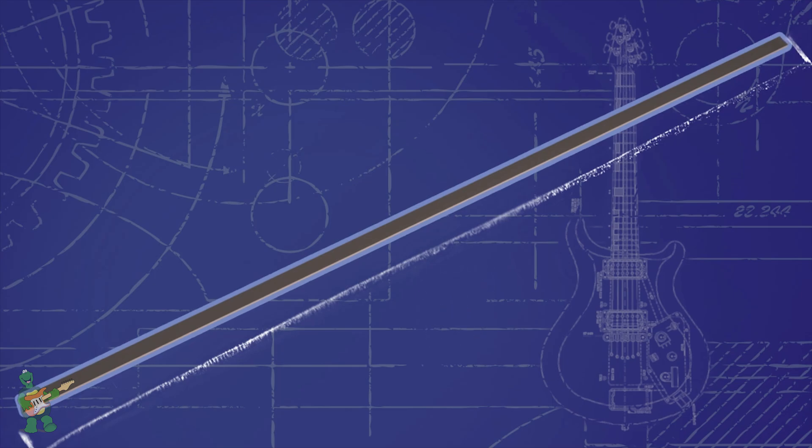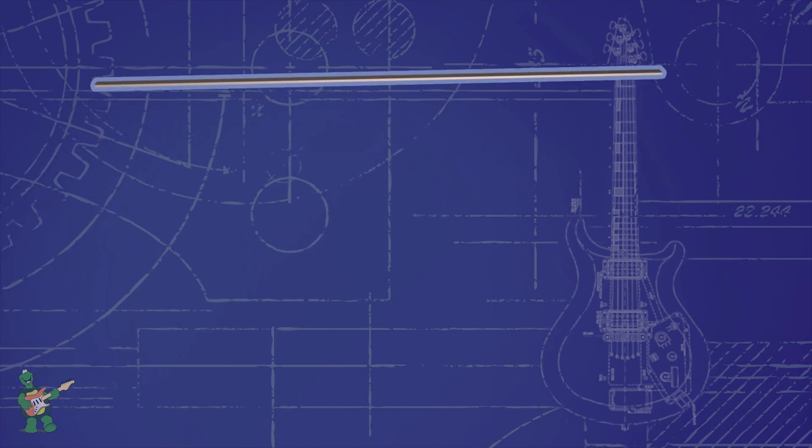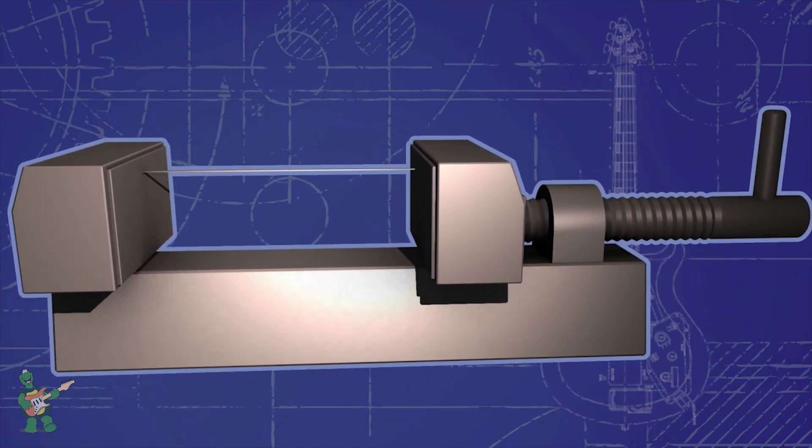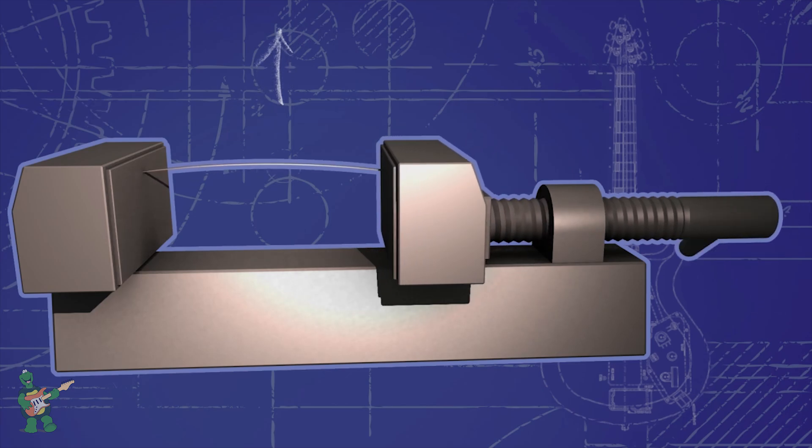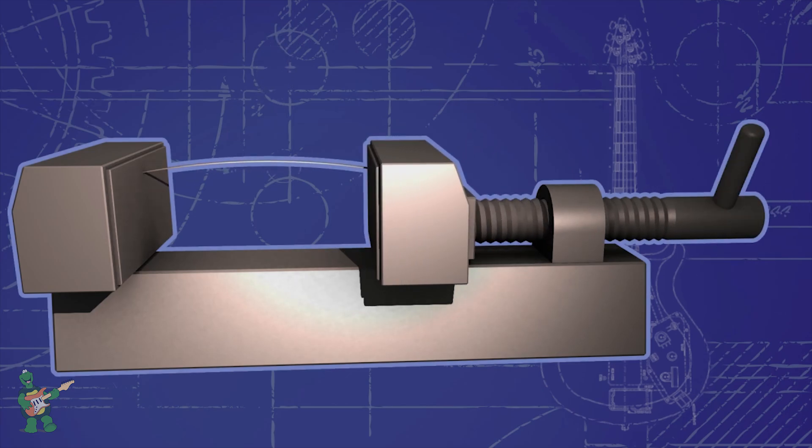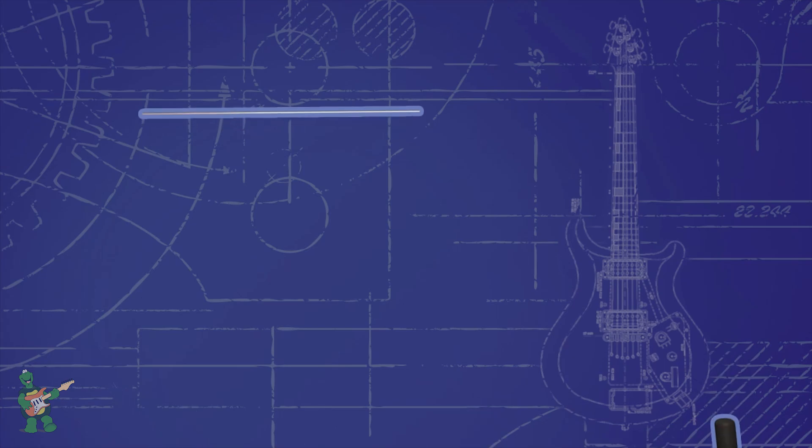In order to make it bend, we need to apply inward pressure. Now imagine putting it in some kind of a gigantic vice. As we begin to tighten the vice, the inward pressure will cause the bar to bow in the middle.